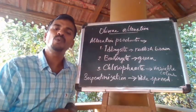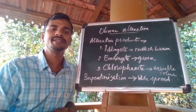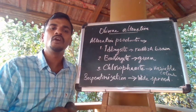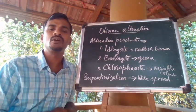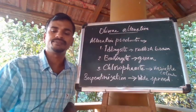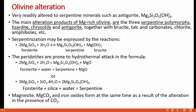Another important aspect is the most widespread olivine alteration: serpentinization. It is a common process of metamorphism in olivine-rich rocks such as dunite and peridotite. Olivines are readily altered to serpentine minerals such as antigorite, with composition Mg3Si2O5(OH)4. The main alteration products of magnesium-rich olivines are the three serpentine polymorphs: lizardite, chrysotile, and antigorite, together with brucite, talc, carbonates, chlorites, and amphiboles.